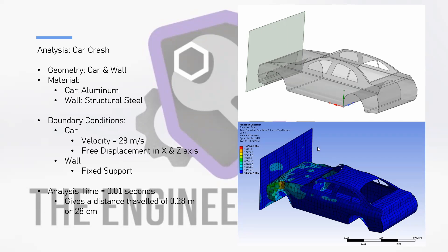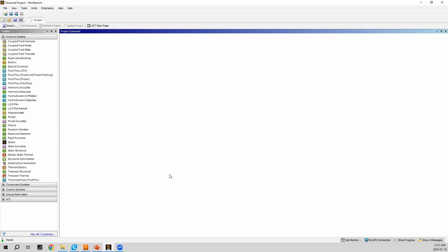On the right-hand side we can see the geometry for this simulation — two surface bodies, one for the car and one for the wall. In the bottom right are the expected results showing equivalent von Mises stresses. We can see the car hitting the wall, and as a result of aluminum being less strong than structural steel, the car frame crumples due to the impact. Now that we understand the geometry, boundary conditions, analysis time, and expected results, we can jump into Workbench.